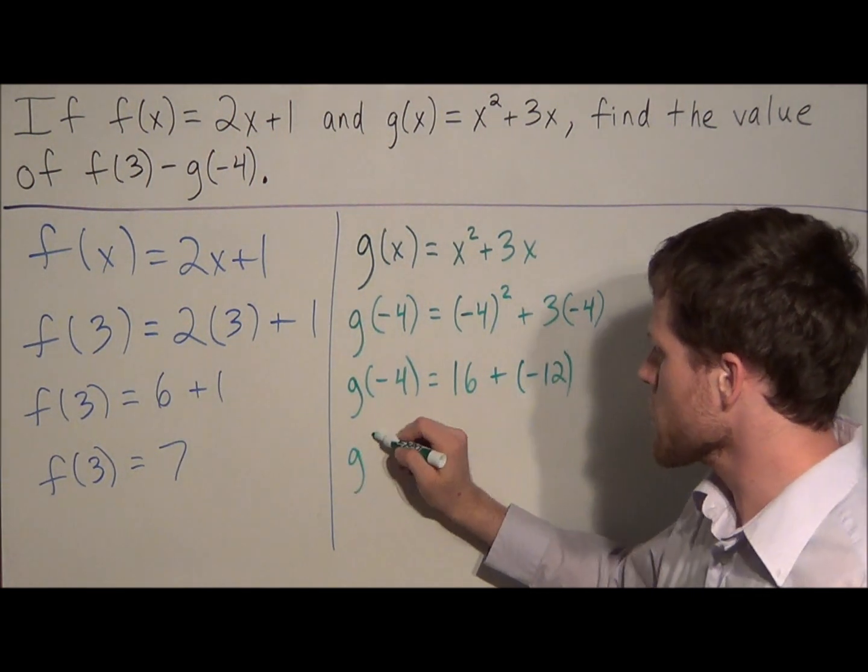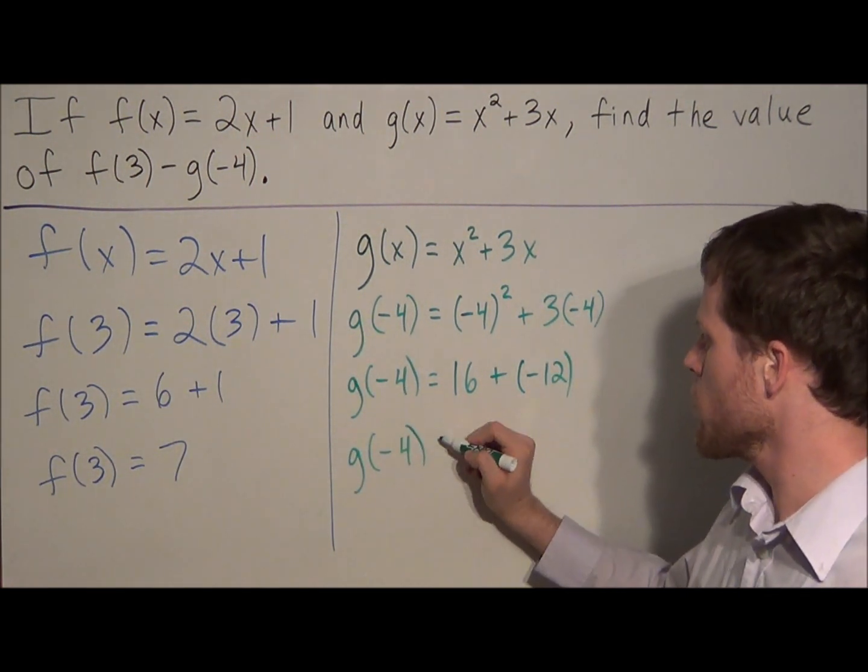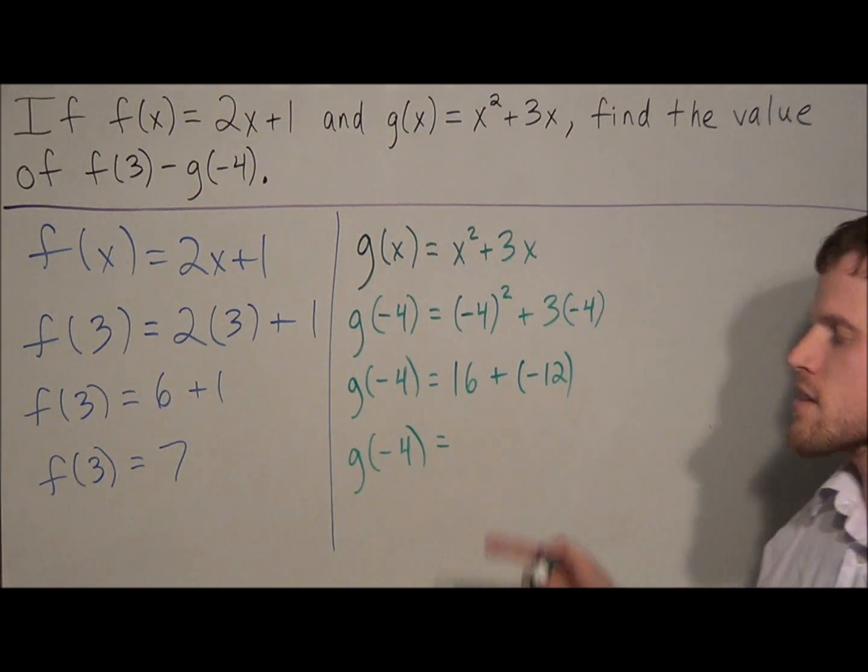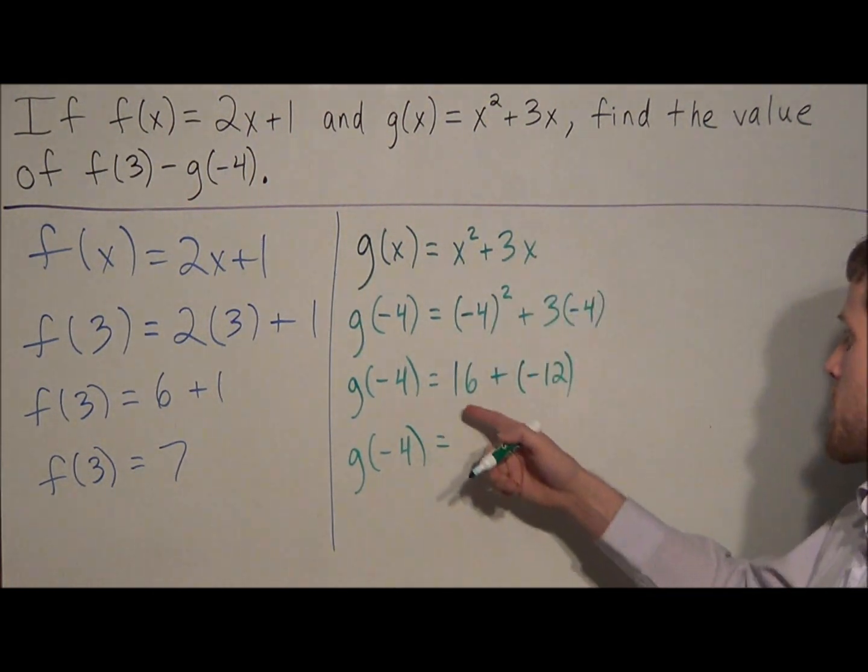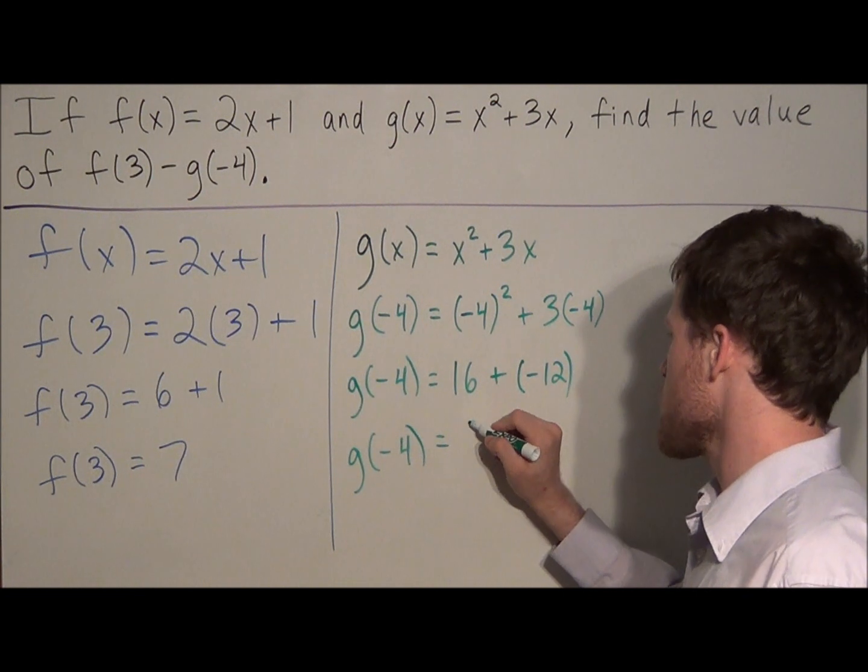So for the next line, all we're doing, g of negative 4 is equal to, well think of 16 plus negative 12 as 16 minus 12. And 16 minus 12 is equal to 4.